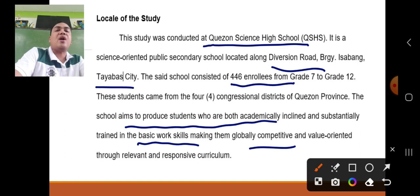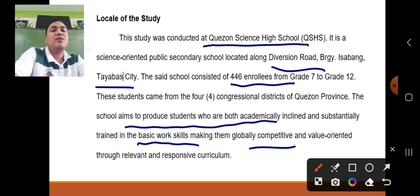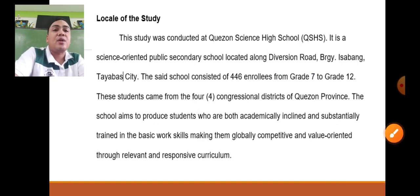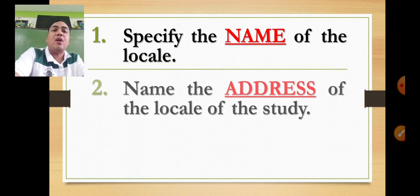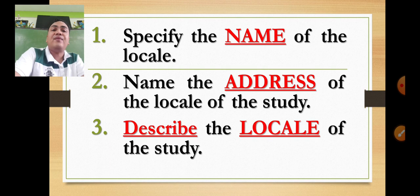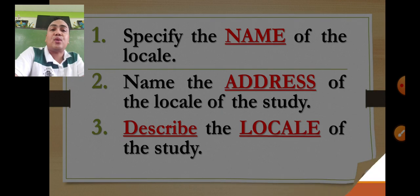For instance, there are 446 enrollees from grade 7 to grade 12 who came from the four congressional districts of Quezon Province. That's how you write the locale of the study — specify the name, address, and description of your school community.